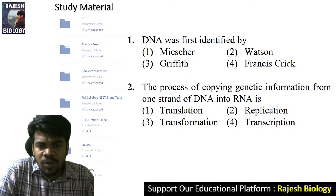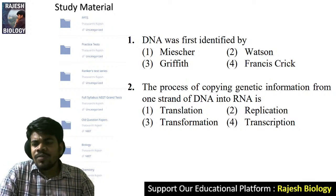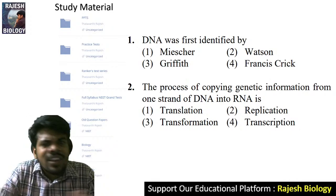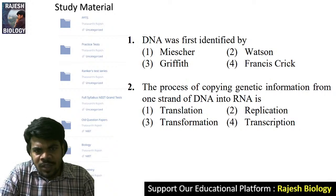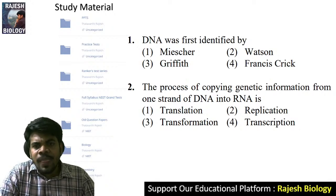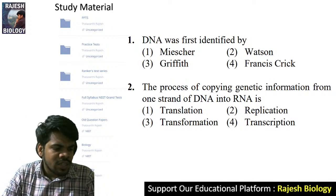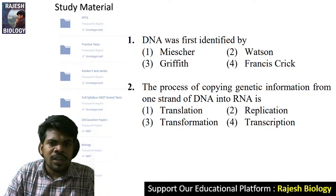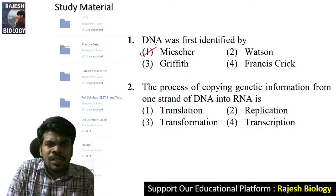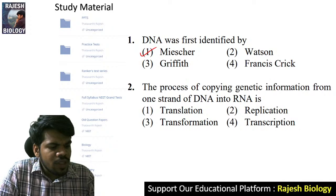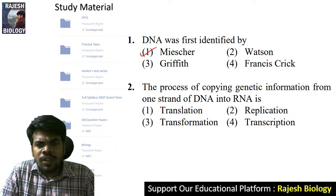Watson and Crick both got the Nobel Prize for the double helical structure of DNA. Actually they were not the first to identify DNA — before Watson and Crick, DNA was already identified. They just explained the structure of DNA as a double helical structure. The scientist who first identified DNA structure — come to the second question.